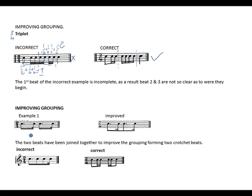Let's look at another example — this is a 2/4 example. The first beat and second beat can be joined together since they have the same note values. The two beats have been joined together to improve the grouping, forming two crochet beats. The incorrect grouping can be separated: a quaver added to two semiquavers gives beat 1, and the same combination again gives beat 2.